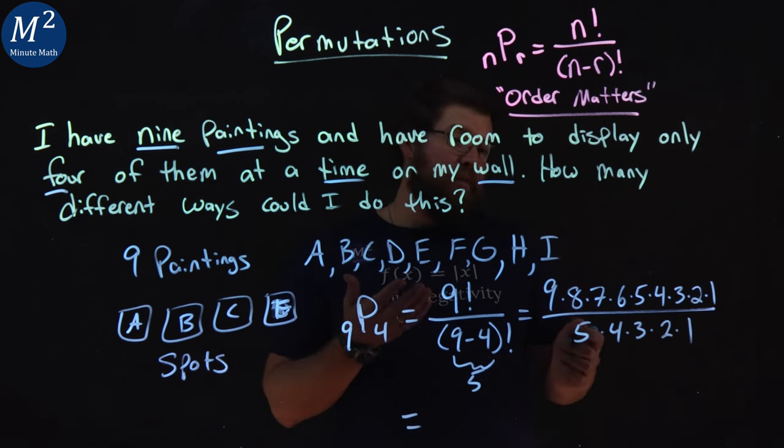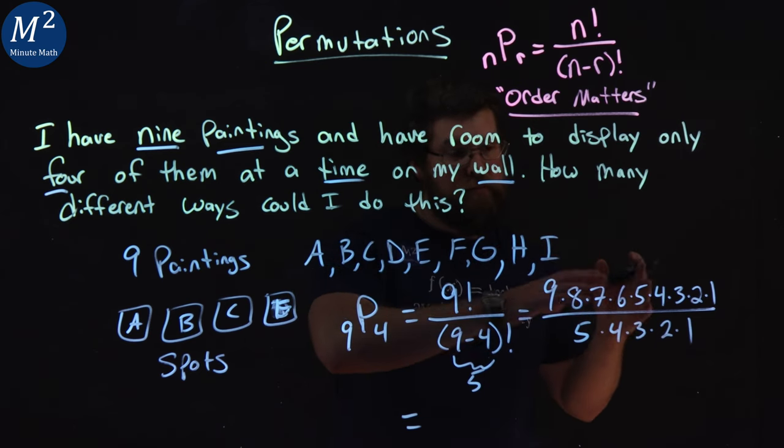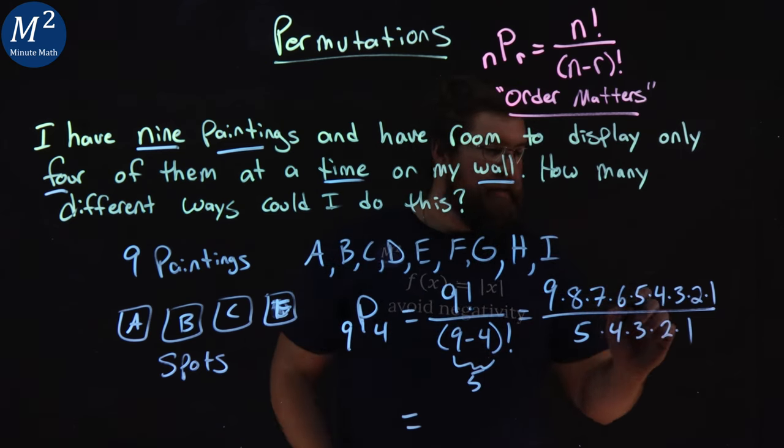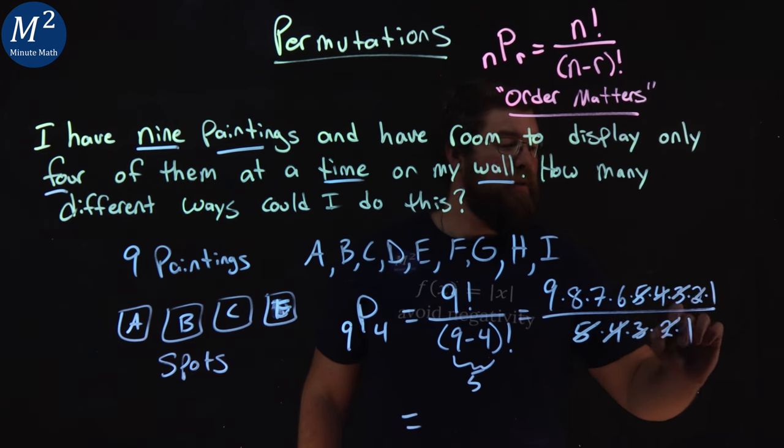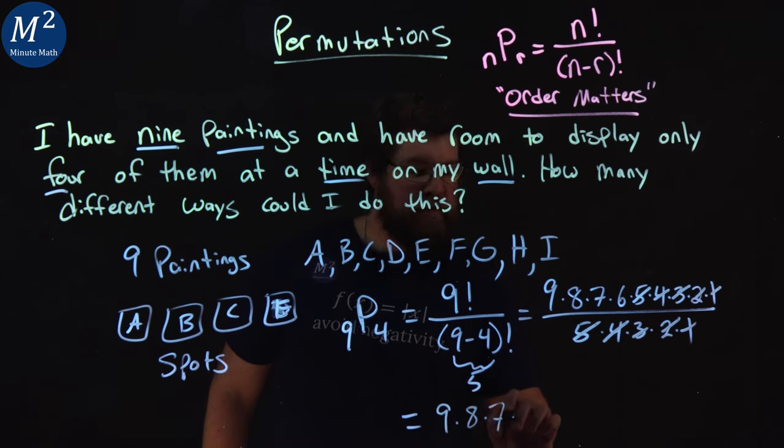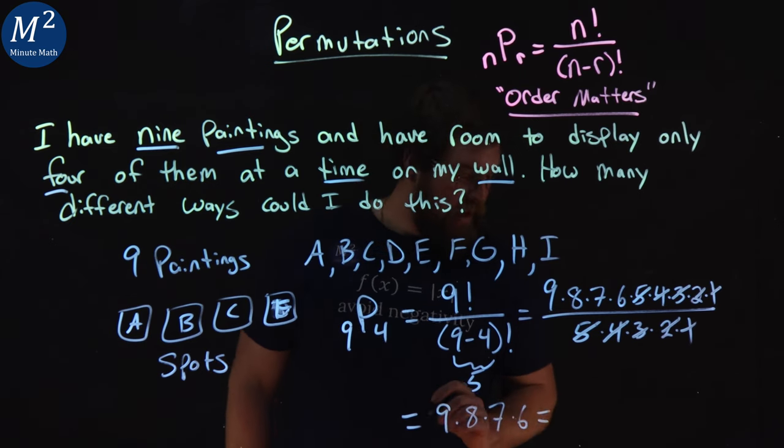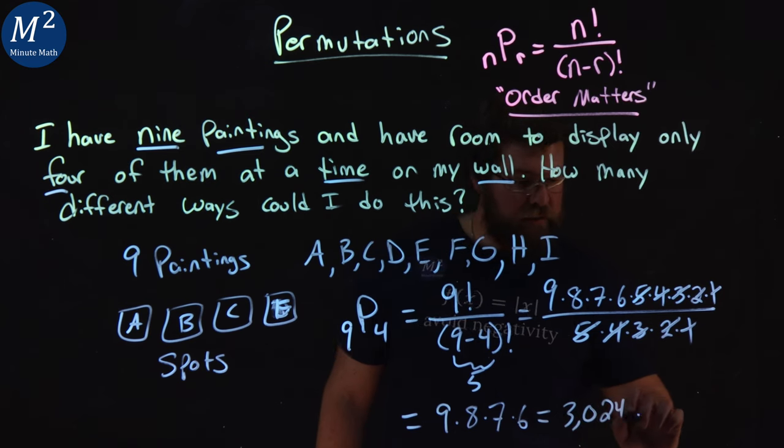And if we're going to simplify this out, don't necessarily just multiply across the numerator and then the denominator here. Find the factorials. 5s cancel, 4s cancel, 3s cancel, 2s cancel, 1s cancel. So we have 9 times 8 times 7 times 6 here. And that comes out to be 3,024 permutations.